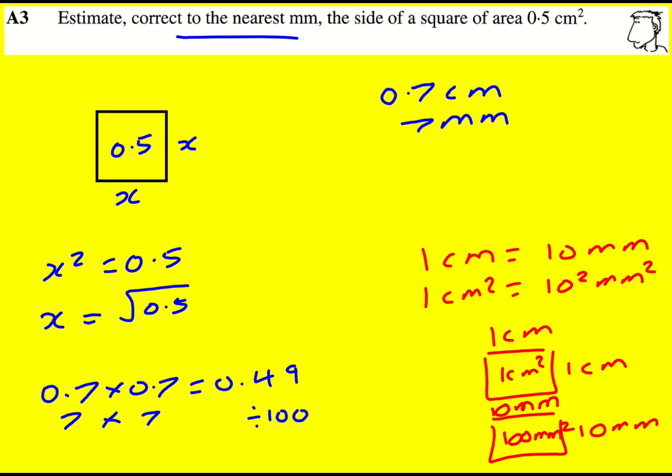So basically what I'm saying is we have to times by 100 to go from centimeter squared to millimeter squared, which gets us to 50 millimeters squared. And then it's probably easier to see from here that it's going to be 7 millimeters.